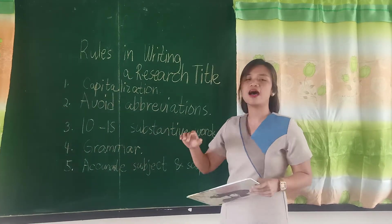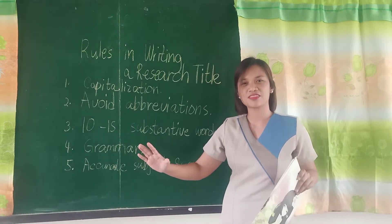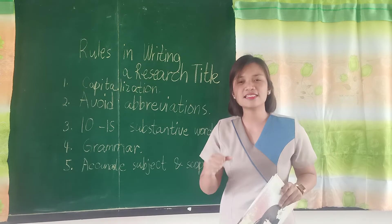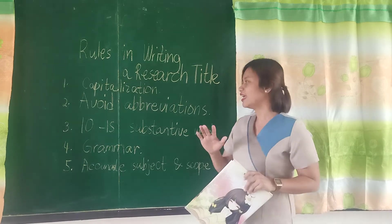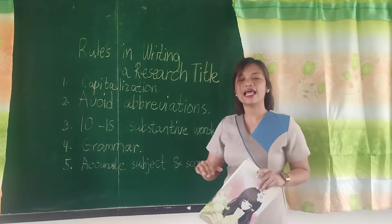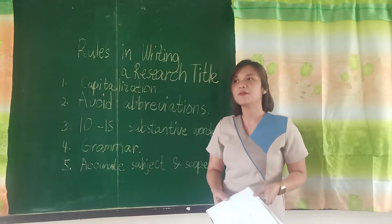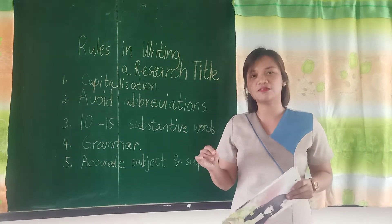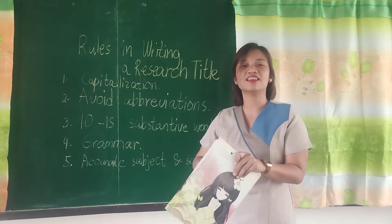Number two: we must avoid abbreviations. In writing a research title, it should be complete. We must avoid abbreviations. Next, number three: ten to fifteen substantive words. We need to count the words included in our research title. It should not exceed fifteen substantive words. Let's not make our title too lengthy — it should be concise, short, and complete.